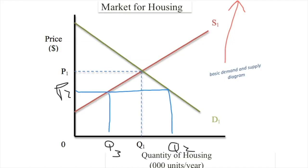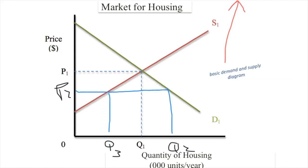All right, now let's take a look at what this means in the marketplace for housing. What's going to happen? We were operating at a P1, Q1 level of output. People had to pay P1, but a ceiling is going to keep it below P2. And what's that going to create? It's going to create increased demand for housing at a Q2 level. But how many houses would actually be provided at a Q2 level? This is where we get into the relationship between the desire of demanders and the desire of suppliers.